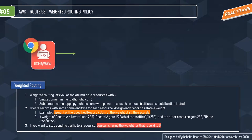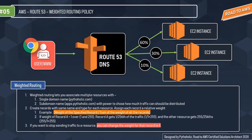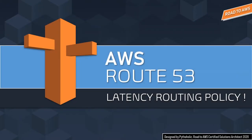In the visualization, we have a user, three EC2 instances, and Route 53 DNS in between. With weighted routing policy, you can divide your traffic based on the percentage of weight you want to direct to a particular resource. For example, 60% of traffic goes to EC2 instance one, 30% to EC2 instance two, and 10% to EC2 instance three.